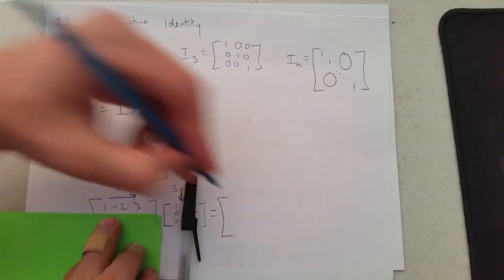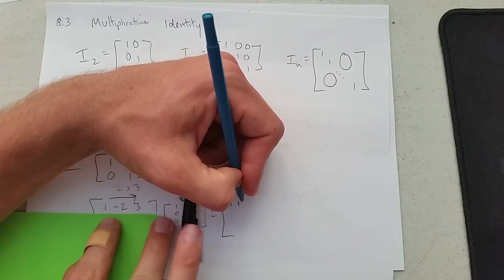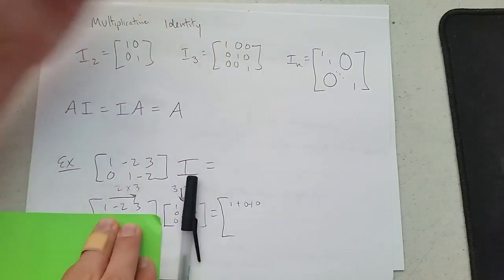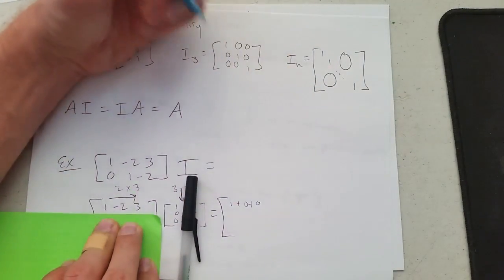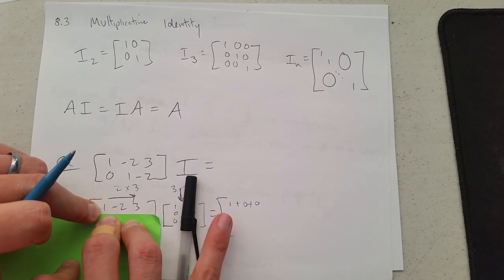So we're going to go 1 times 1 is 1, plus negative 2 times 0 is 0, plus 3 times 0 is 0. So that is the upper left entry. So that is row 1 times column 1, which gives us row 1, column 1.